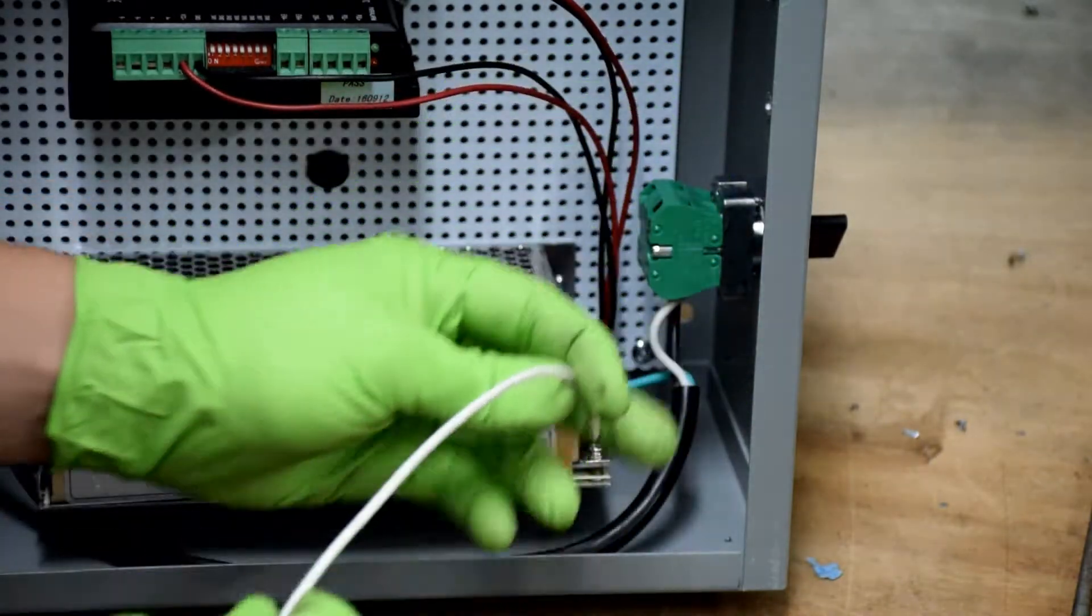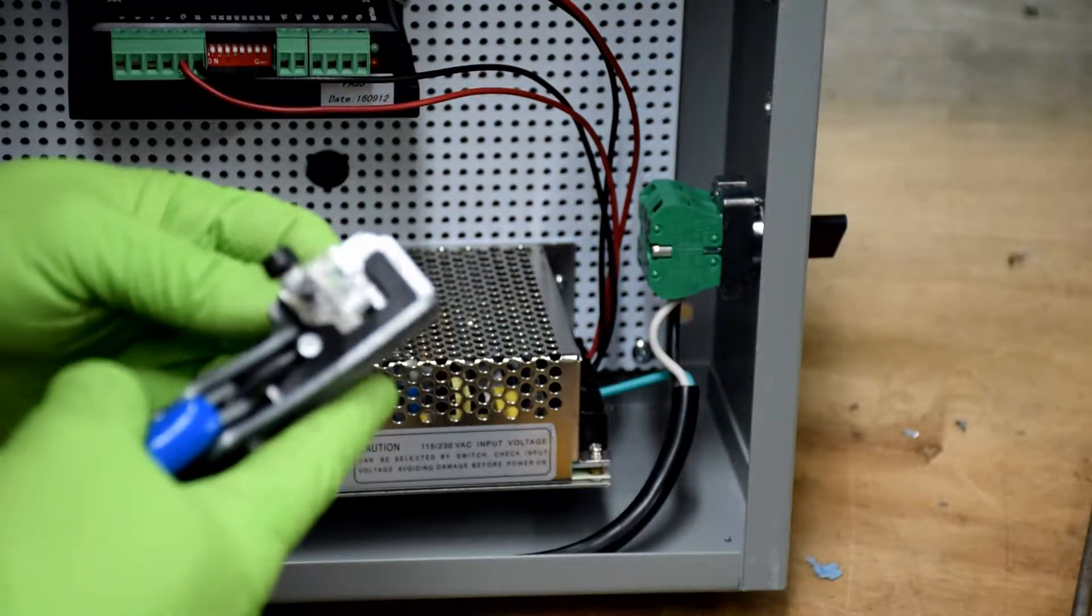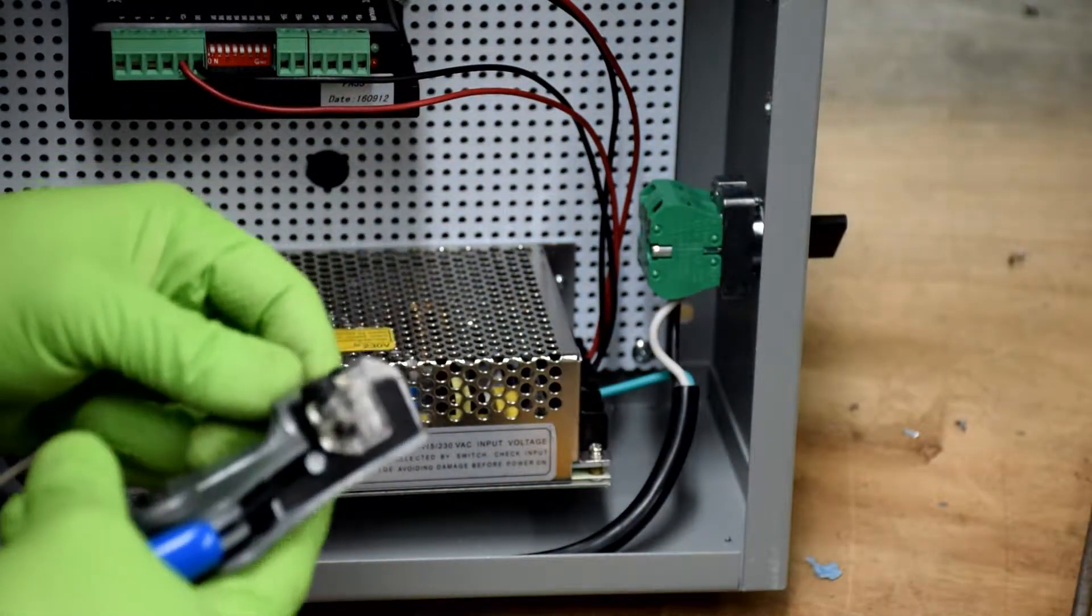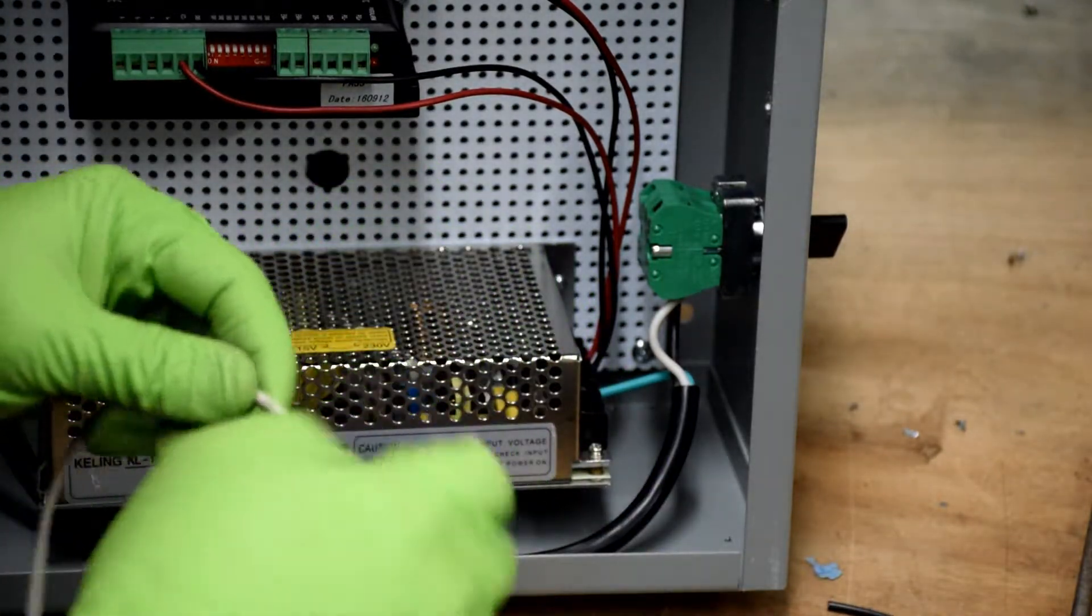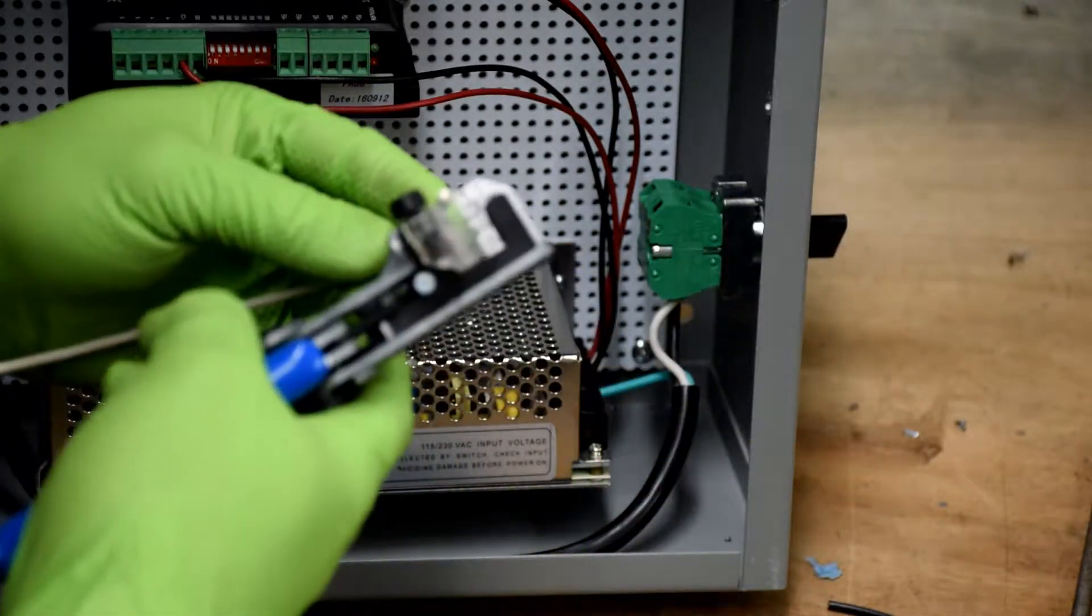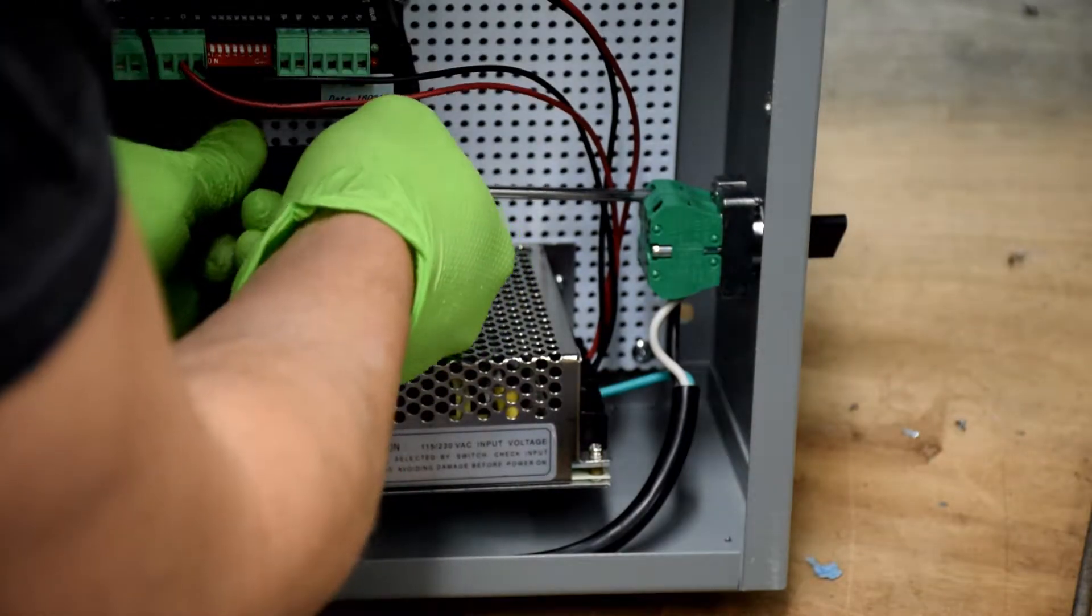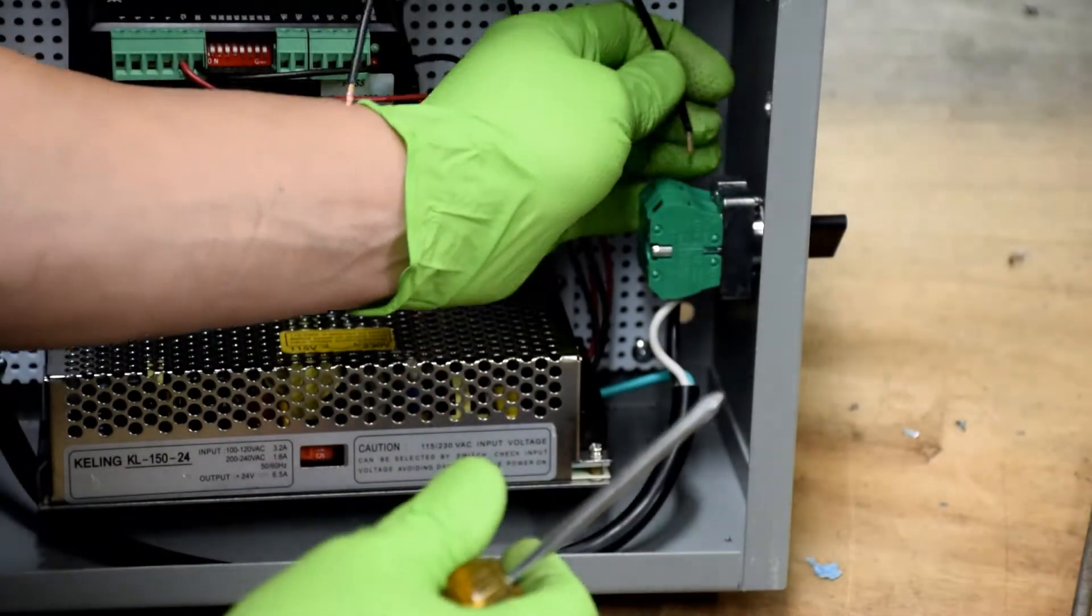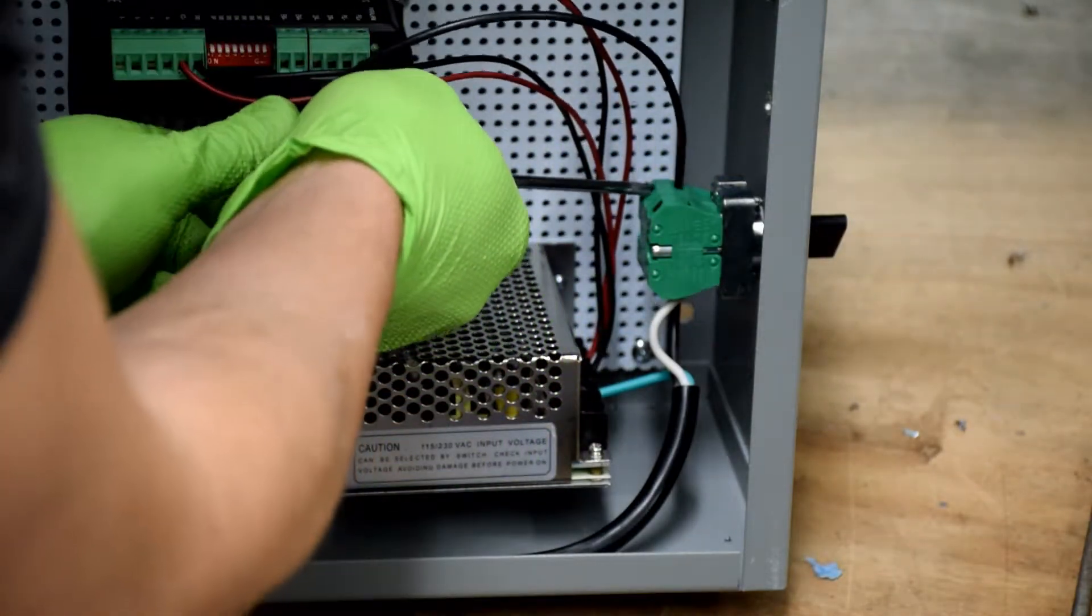And these are going to be wired into the power supply into the line and neutral terminals. And those are designated by an L and an N. So just strip off the wire, twist up the ends like you've been doing. Make sure you put the correct wire in the correct terminal, black to black and white to white.